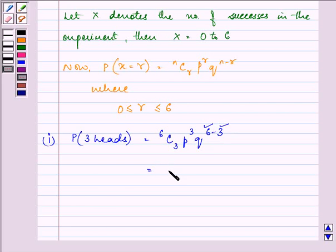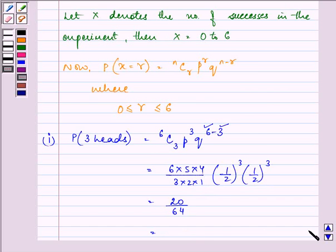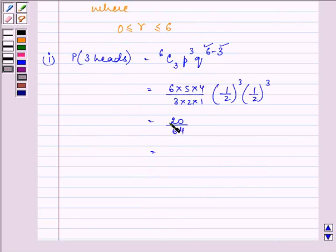So on simplifying it, we have six times five times four upon three times two times one, one upon two raised to the power three, into one upon two raised to the power three. That gives us twenty by sixty-four, and on simplifying it, we have it as five upon sixteen. So this is the answer to the first part.